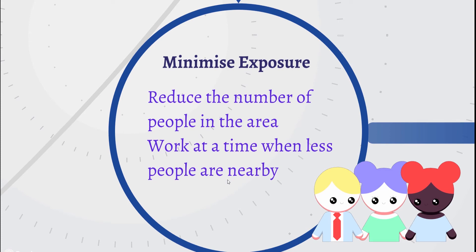Step six is based around minimising exposure. You should make an active attempt to reduce the number of people in the area who may be in harm's way — for example, using temporary signage to direct them away from the process, restricting access, or even choosing to undertake the work at a time when fewer people are likely to be affected, such as at weekends or during a known quiet period.